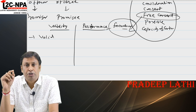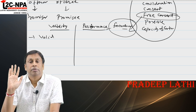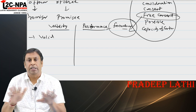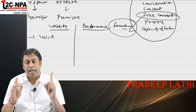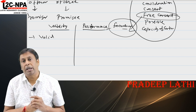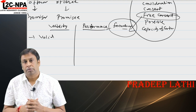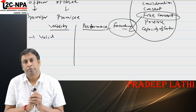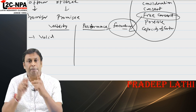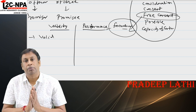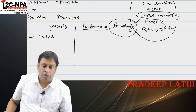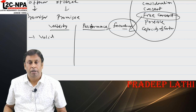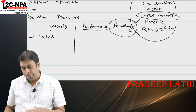Performance basis: executed and executory. Executed contract means performance has been done by all parties — for example, a cash sale where goods are given and money is paid immediately. Executory contract means performance is to be done in the future. Executory has two parts: unilateral, where one party has performed and the other has not yet; and bilateral, where both parties are yet to perform in the future.